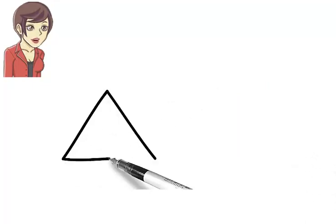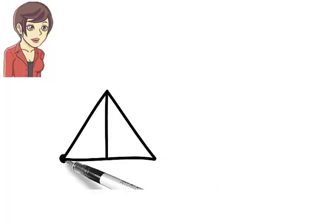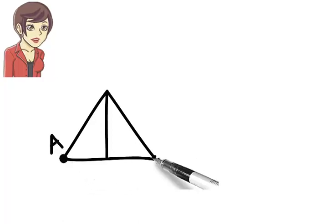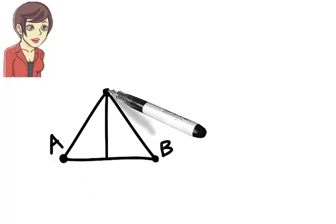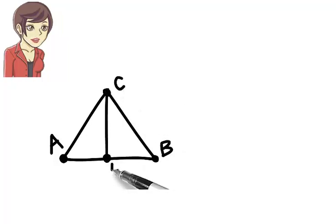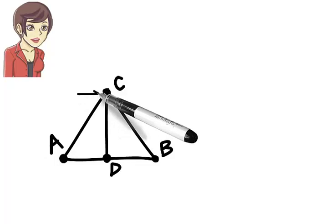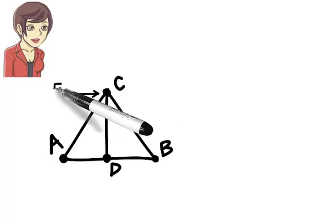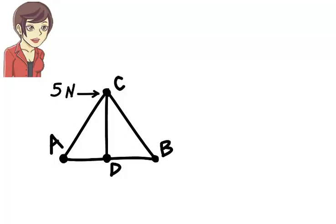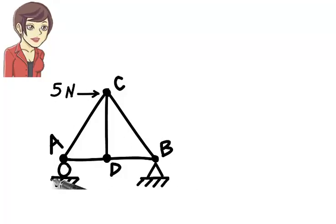Here is a simple truss structure with five members. The frictionless joints of the truss are labeled A, B, C, and D. The truss is subjected to a horizontal force of five newtons at joint C. The entire structure rests on a pin and a roller.